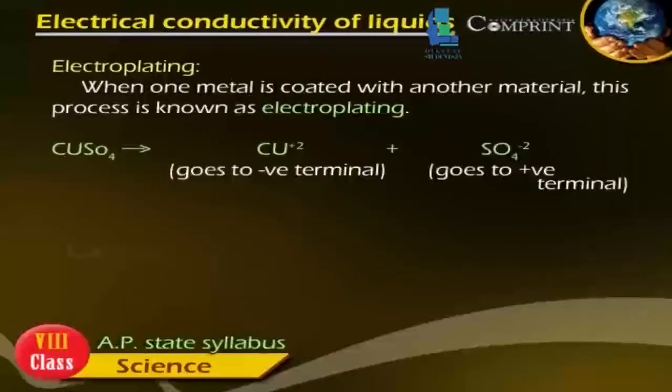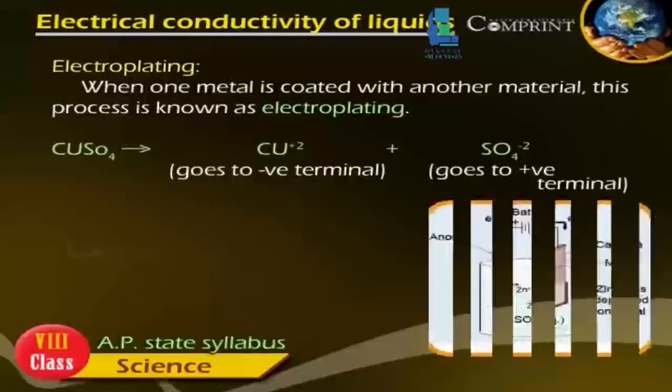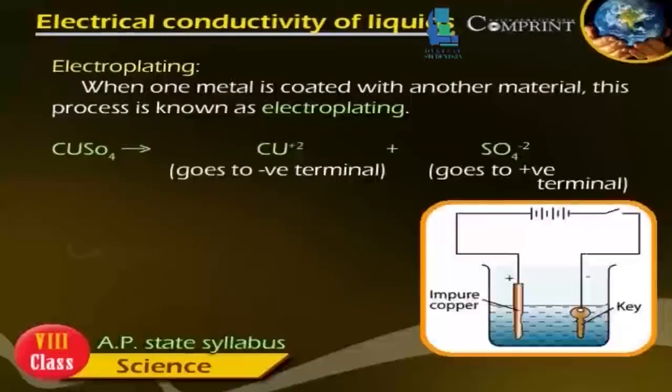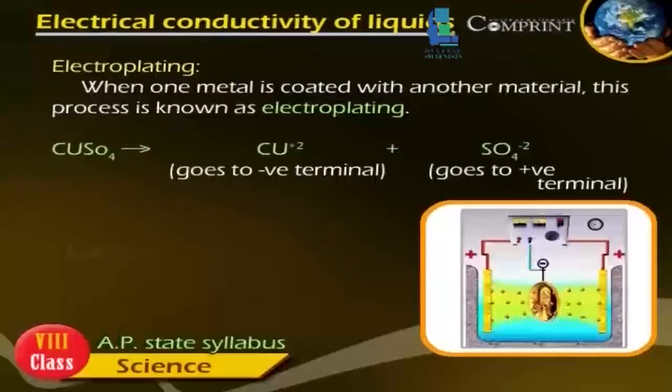Electroplating. When one metal is coated with another material, this process is known as electroplating. CuSO4 dissociates to give Cu²⁺ and SO4²⁻.